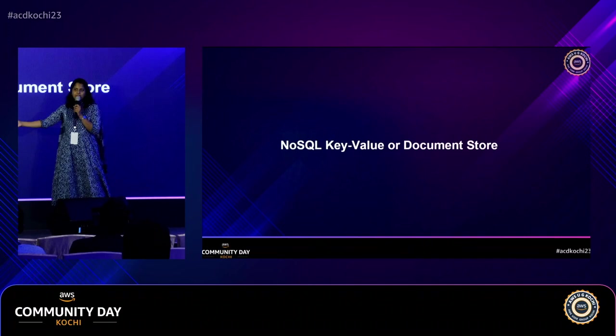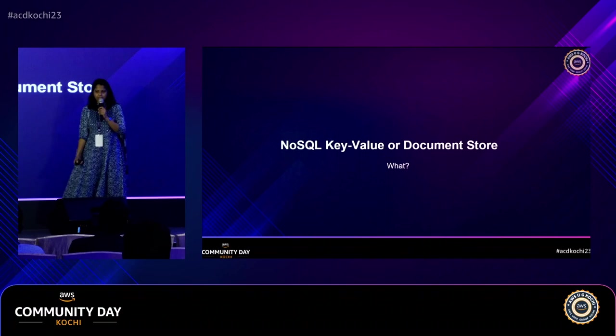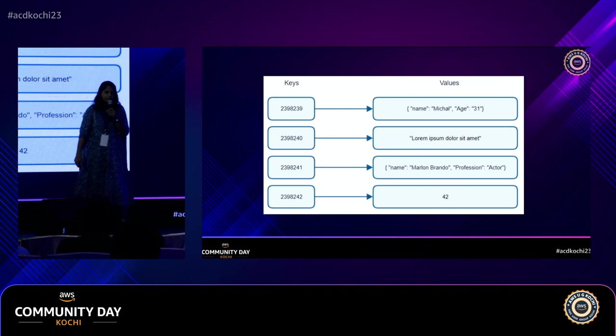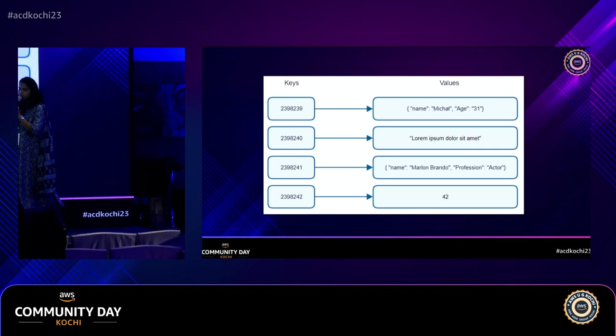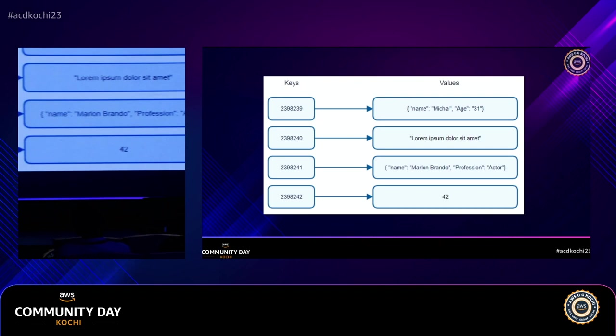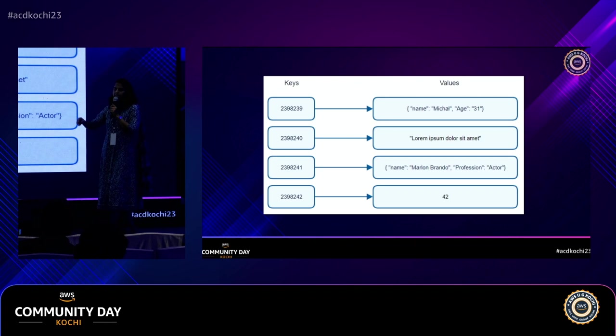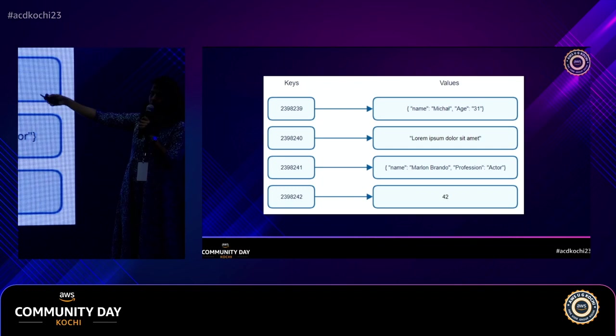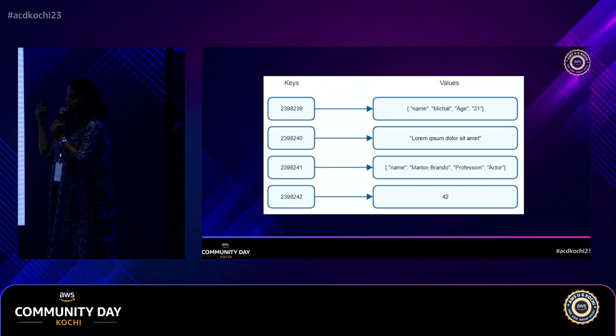DynamoDB is a NoSQL key-value data store. In my introduction, I showed data in JSON format — DynamoDB stores data in JSON format. For it to store data in JSON, you also have to give a key, like a primary key in SQL. The value is a JSON document. In traditional SQL, data is stored in tables; in DynamoDB, it is stored as a JSON document pointed to a key — like a map or key-value pair. That's how DynamoDB stores data internally, and DynamoDB gives you predictable single-digit millisecond performance.